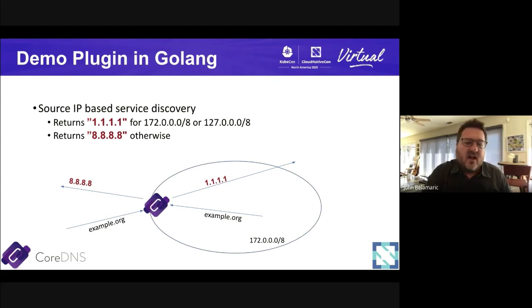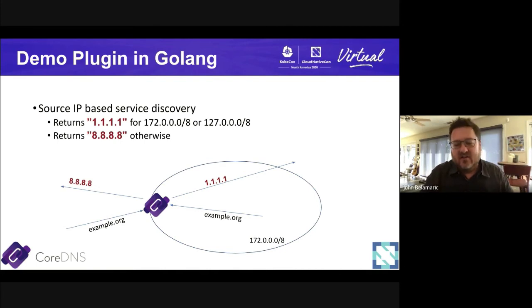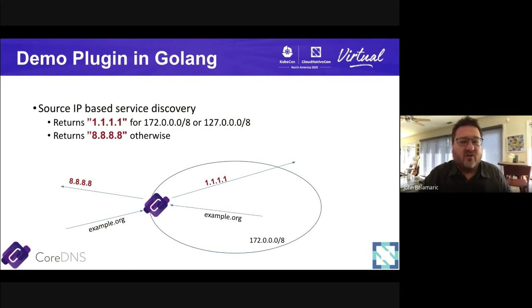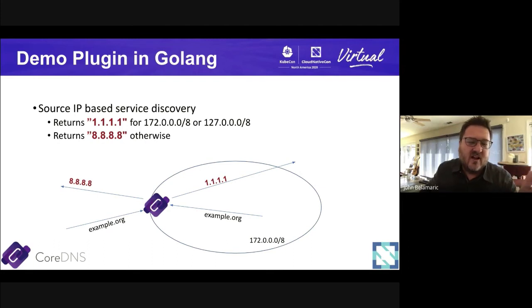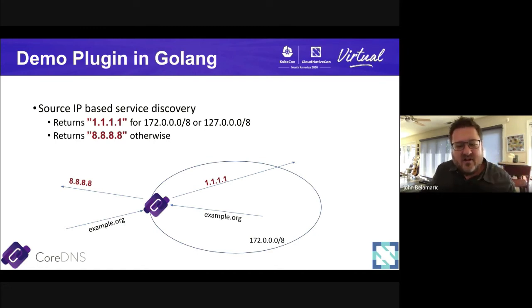So how do we change that behavior? We change it by creating our own plugin. It doesn't change the routing but adds another layer of routing. The demo plugin — available on our CoreDNS GitHub organization in the demo repository — returns a different result based upon the source IP address of the request. For example, for the 172.0/8 or localhost network, it returns 1.1.1.1; otherwise 8.8.8.8.